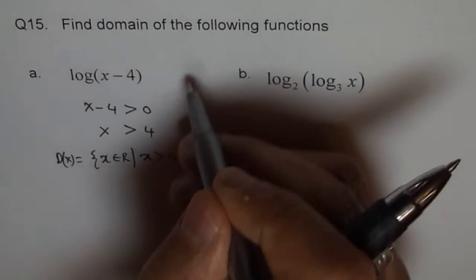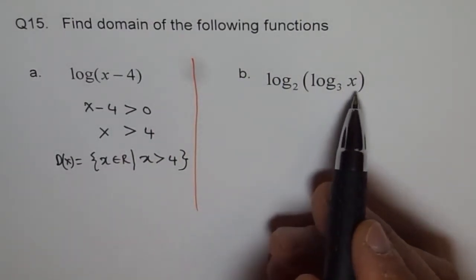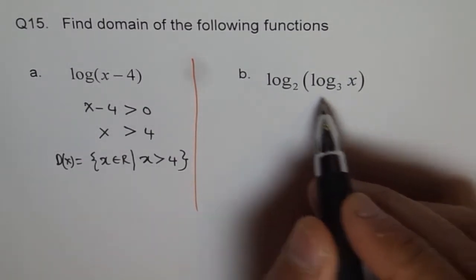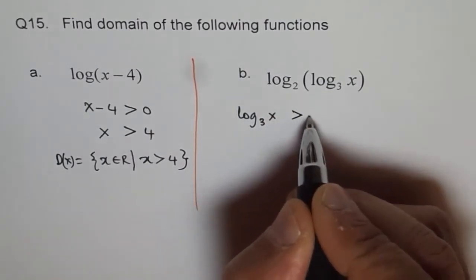Now, for part B, it's log 2 of log 3x, that means log of 3x should always be positive. So that means log of 3x has to be greater than 0.